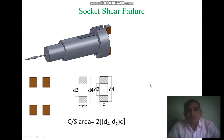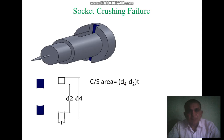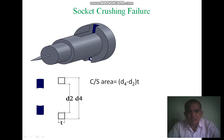Tau is shear stress, equal to force per unit area. The socket also fails in crushing failure — the collar is pushed against the collar thickness and may fail in crushing stress. The blue color indicates the cross-sectional area where the total crushing stress occurs.